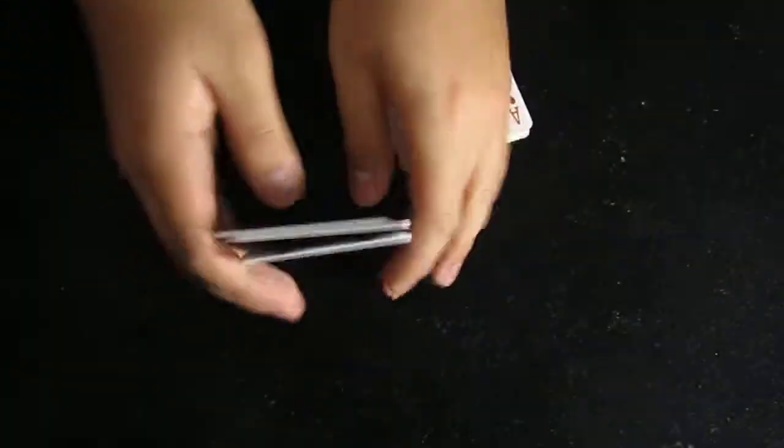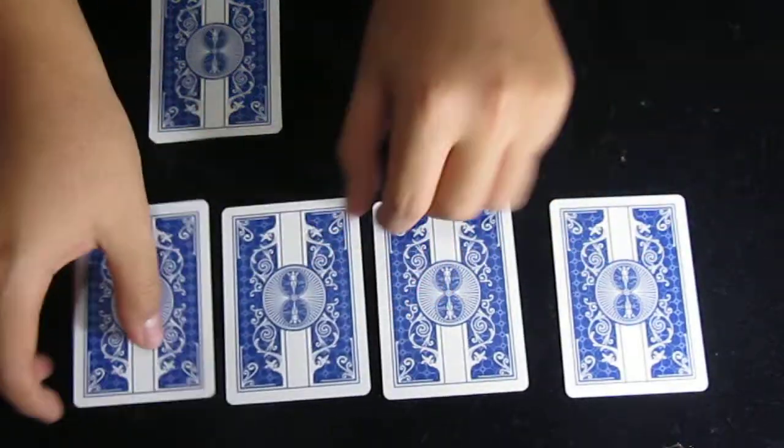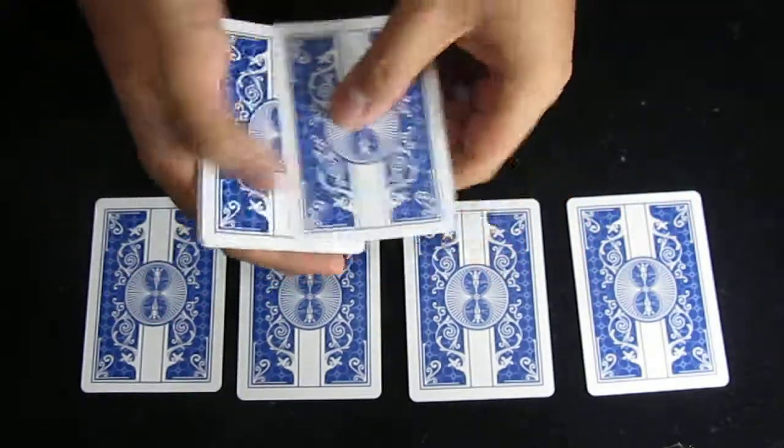Okay, let's try one more thing. I've got the aces here. One, two, three, and four. And this time I'll sandwich them between the three indifferent cards.